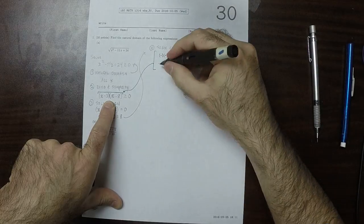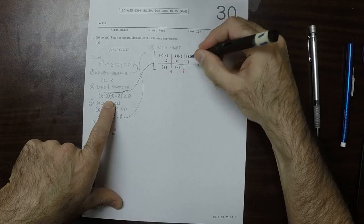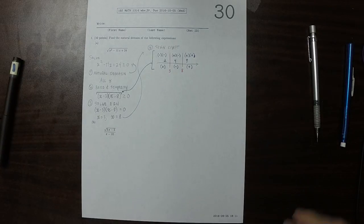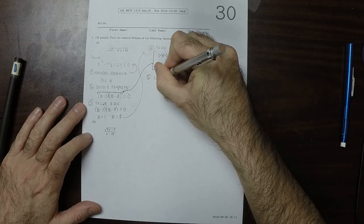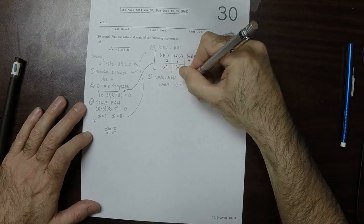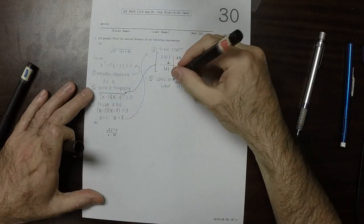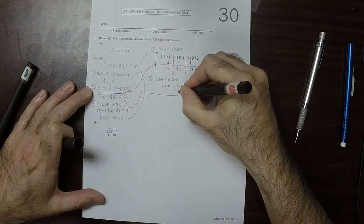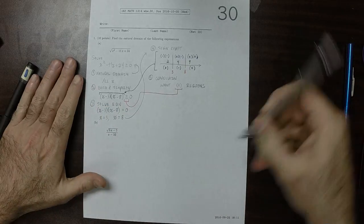And then the overall sign: negative and negative is positive, positive and negative is negative, positive and positive is positive. So we made our chart, and now we can make our conclusion. We want in this case the positive regions. The reason why we want the positive regions is because of this, that says greater or equal to 0, so we want this left-hand side to be positive or 0.